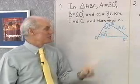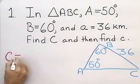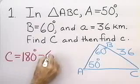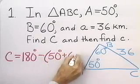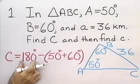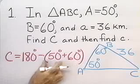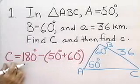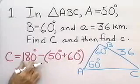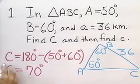Now I'll find angle C first, and then after that I'm going to find side C. Angle C will be 180 degrees minus the sum of 50 degrees and 60 degrees. That's because the sum of the three angles in any triangle has to add up to 180 degrees, so I have two of them — 50 and 60. I'll add those up, subtract from 180, and I'll have the measure of angle C. So 50 plus 60 is 110, and 180 minus 110 is going to be 70 degrees.